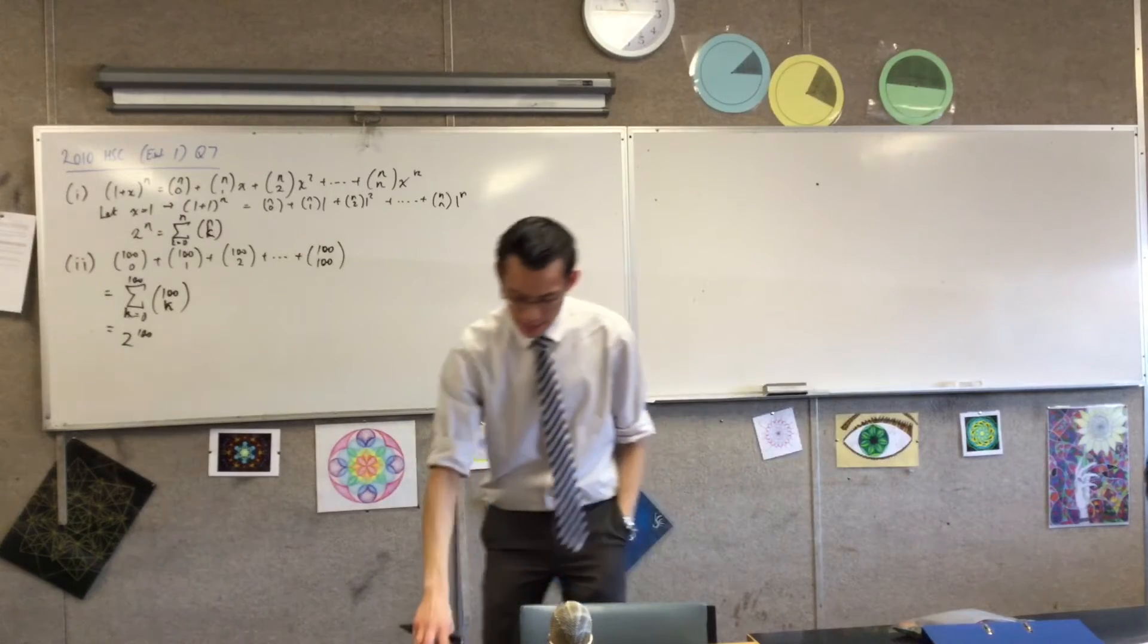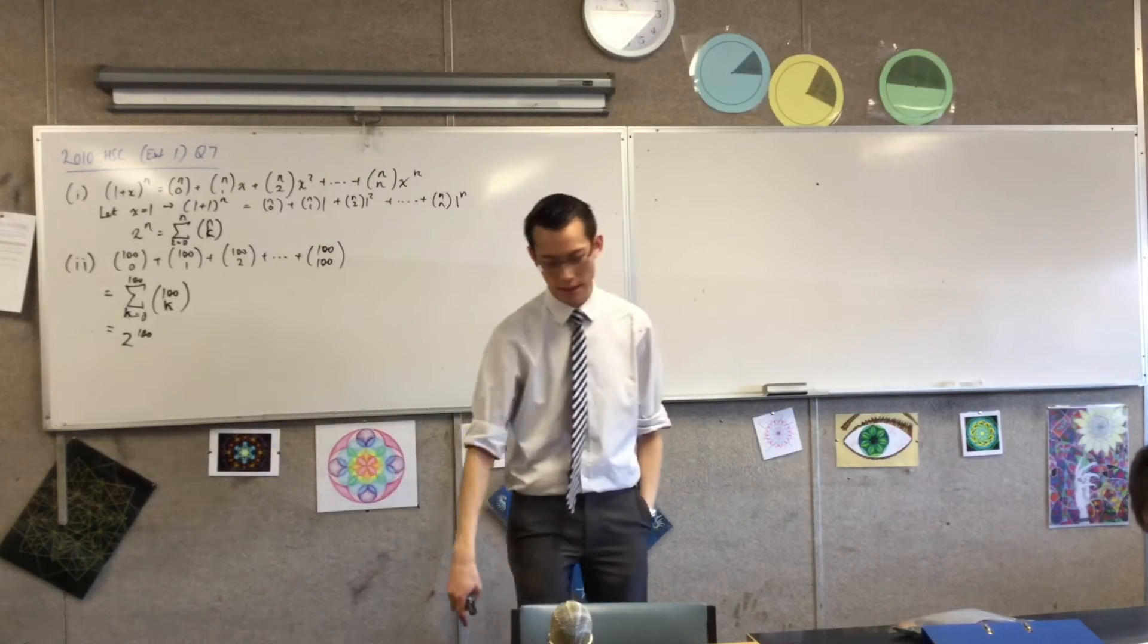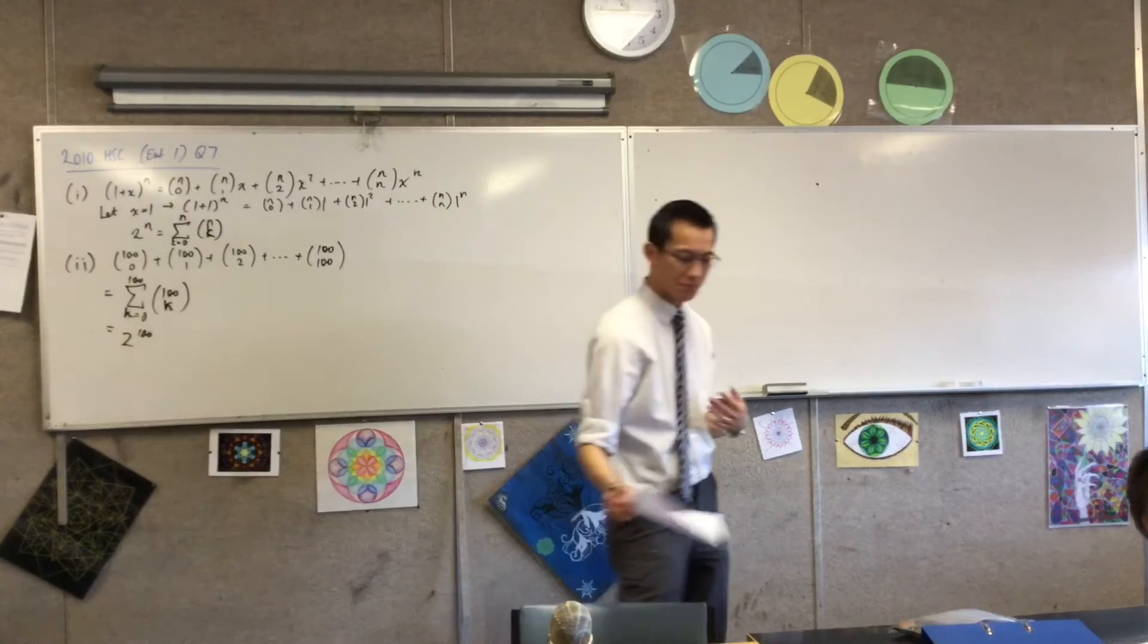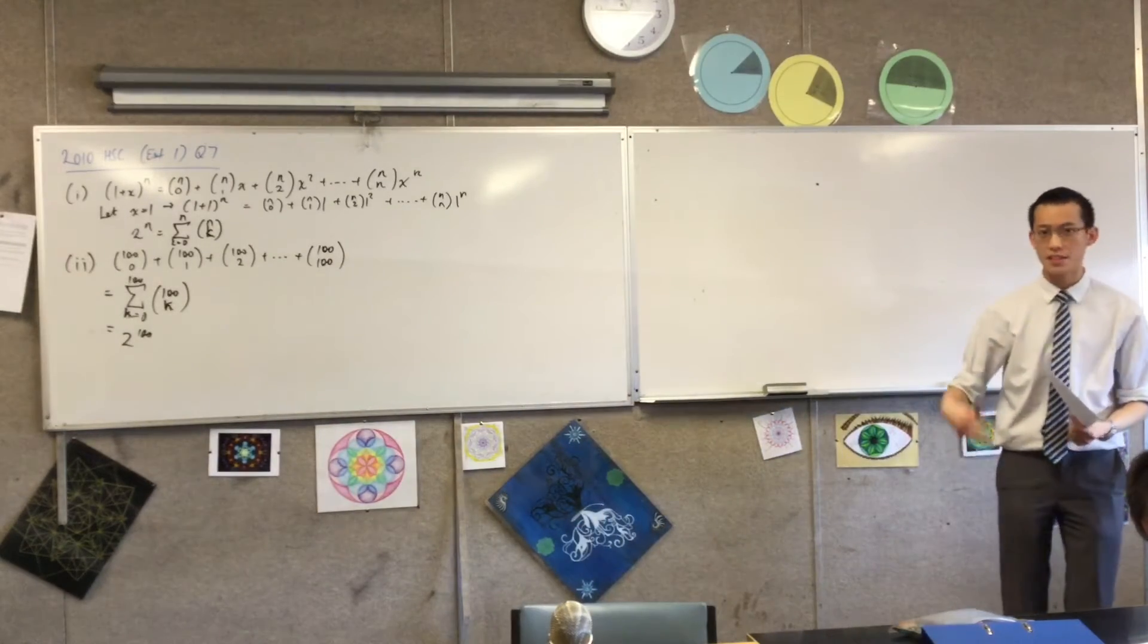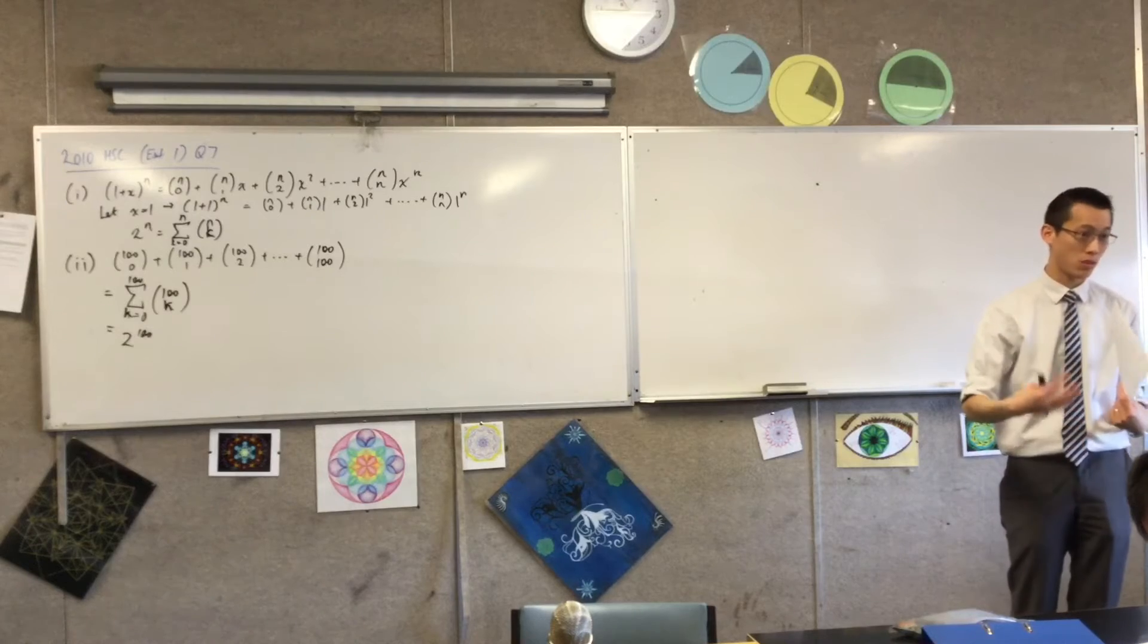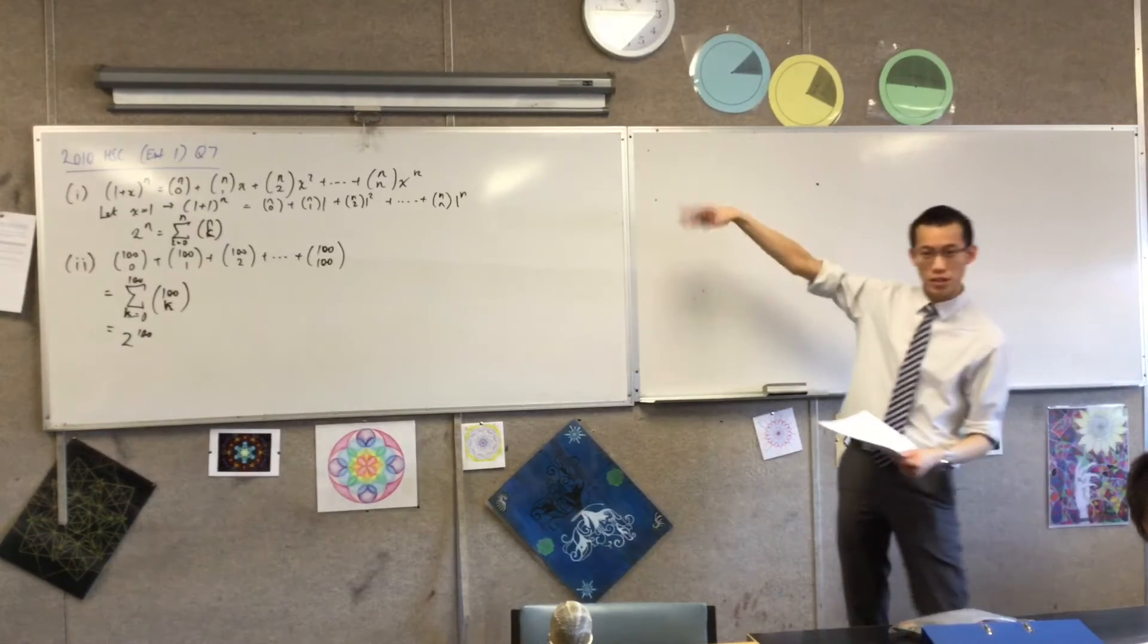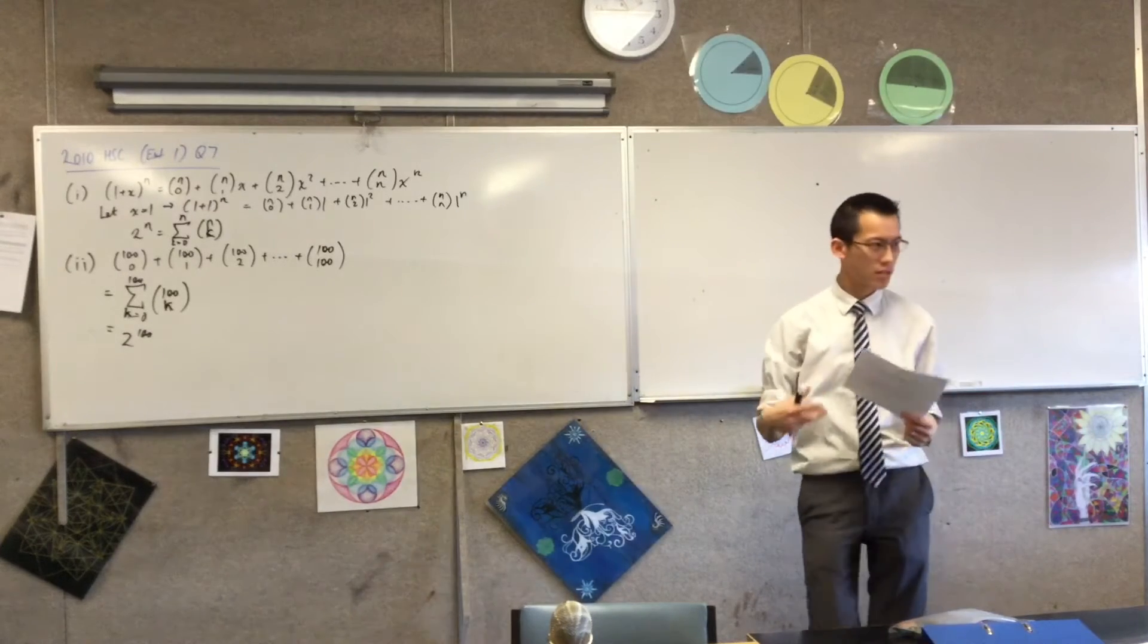Alright, so then you get to part 3, and it says show that, and then there's a result there. Now have a look at the result. There's a clue, particularly on the left-hand side, that tells you what technique, what method, what strategy you could use to get from all this stuff to that line. What's the clue?